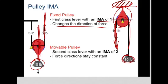A fixed pulley is used just to change the direction of the force. A movable pulley has an IMA of 2, so it makes it feel easier — because if you have an ideal mechanical advantage greater than 1, it feels easier. It's second class. If you're trying to lift a 10-pound object, you would feel only 5 pounds of force — it's just half as hard. So the ideal mechanical advantage of movable pulleys is 2.